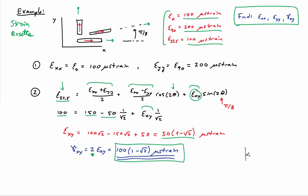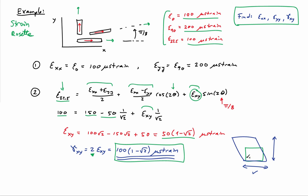Thinking about the deformation: starting with a little square, it elongates in the x direction and a bit more in the y direction, while the angle between the x and y axes opens up, giving a negative shear strain. There's 100 microstrain in the x direction, double that in the y direction, and the 90-degree angle opens up by the computed shear value. It opens because the shear strain is negative; if it were positive, the angle would close and the object would shear in the other direction.